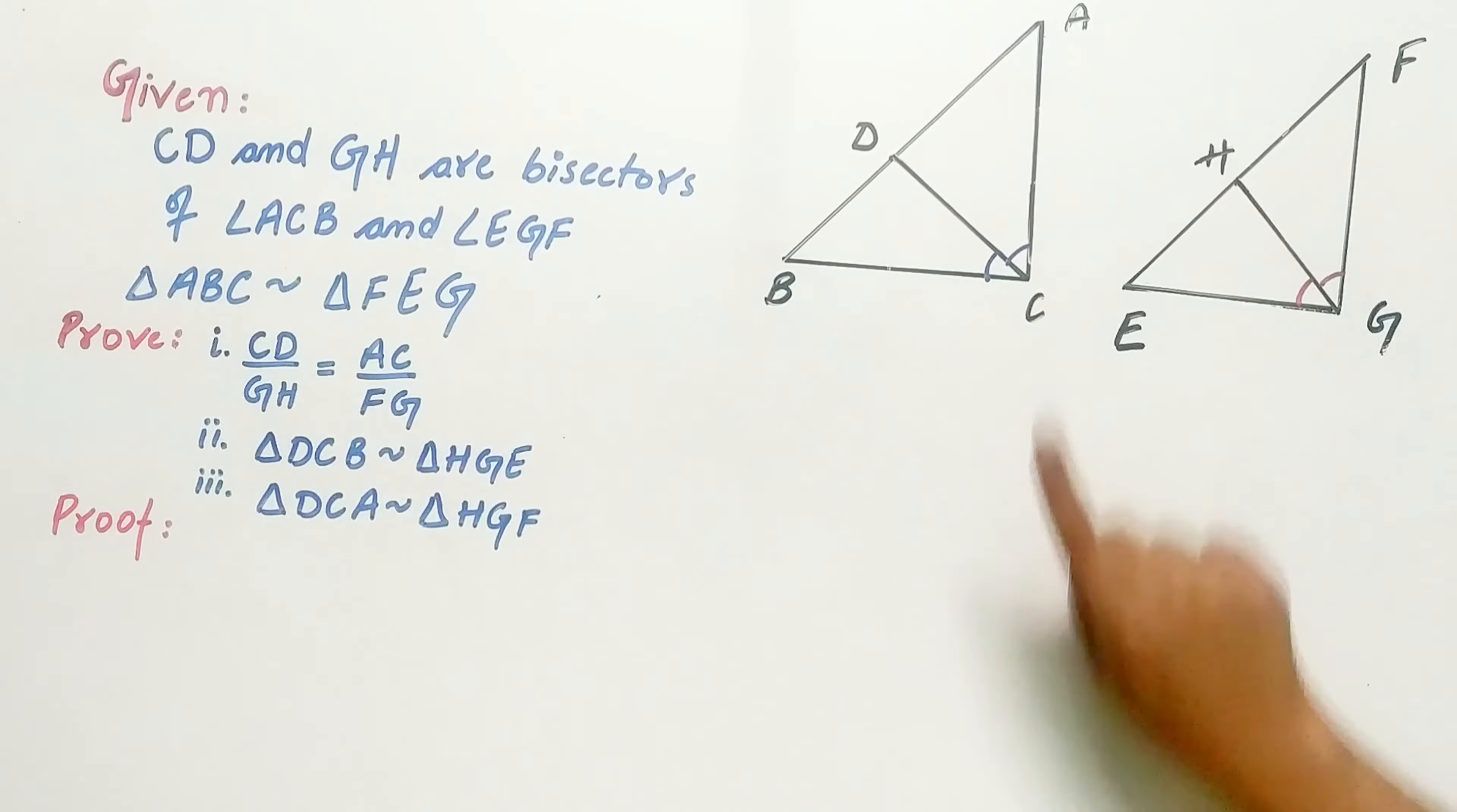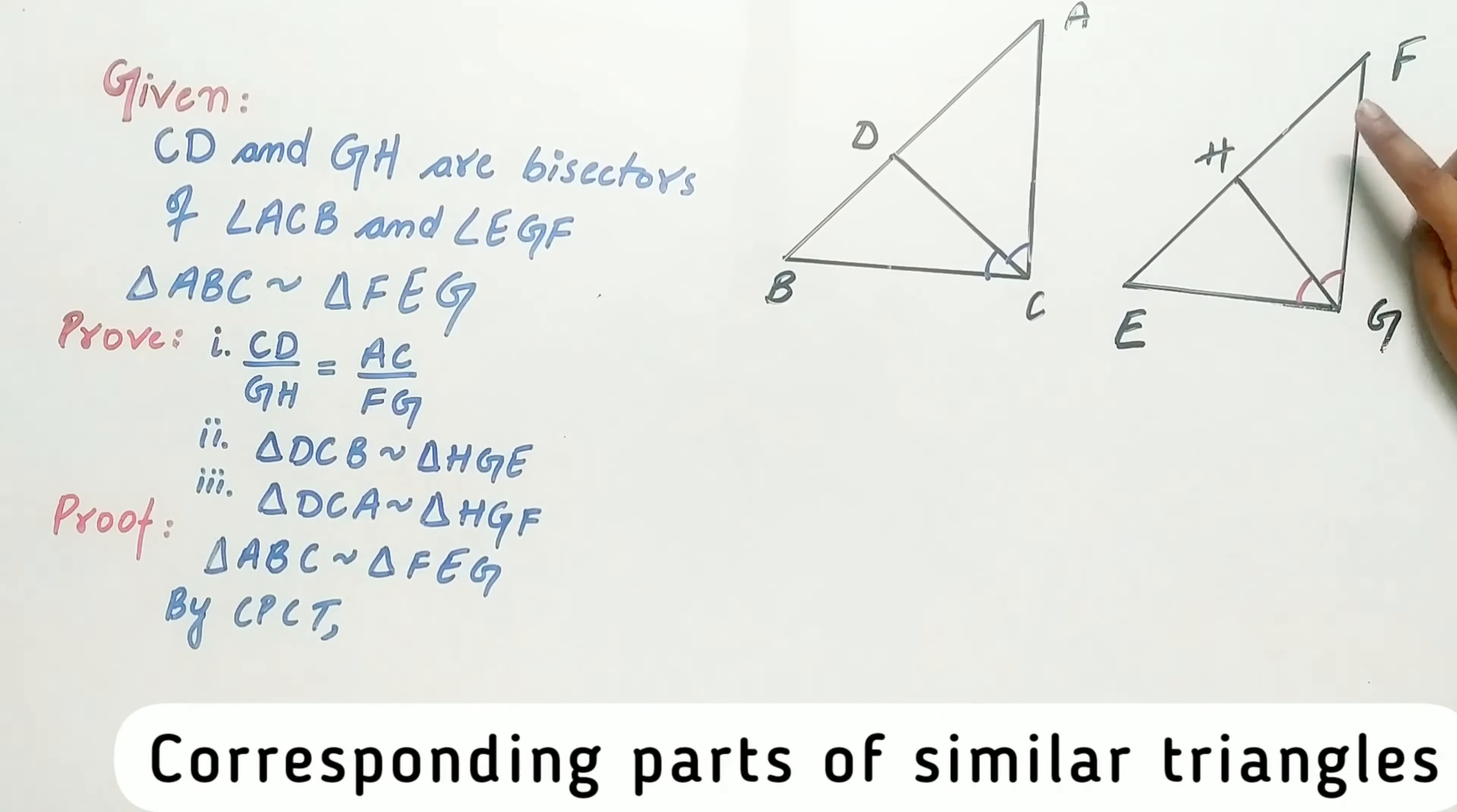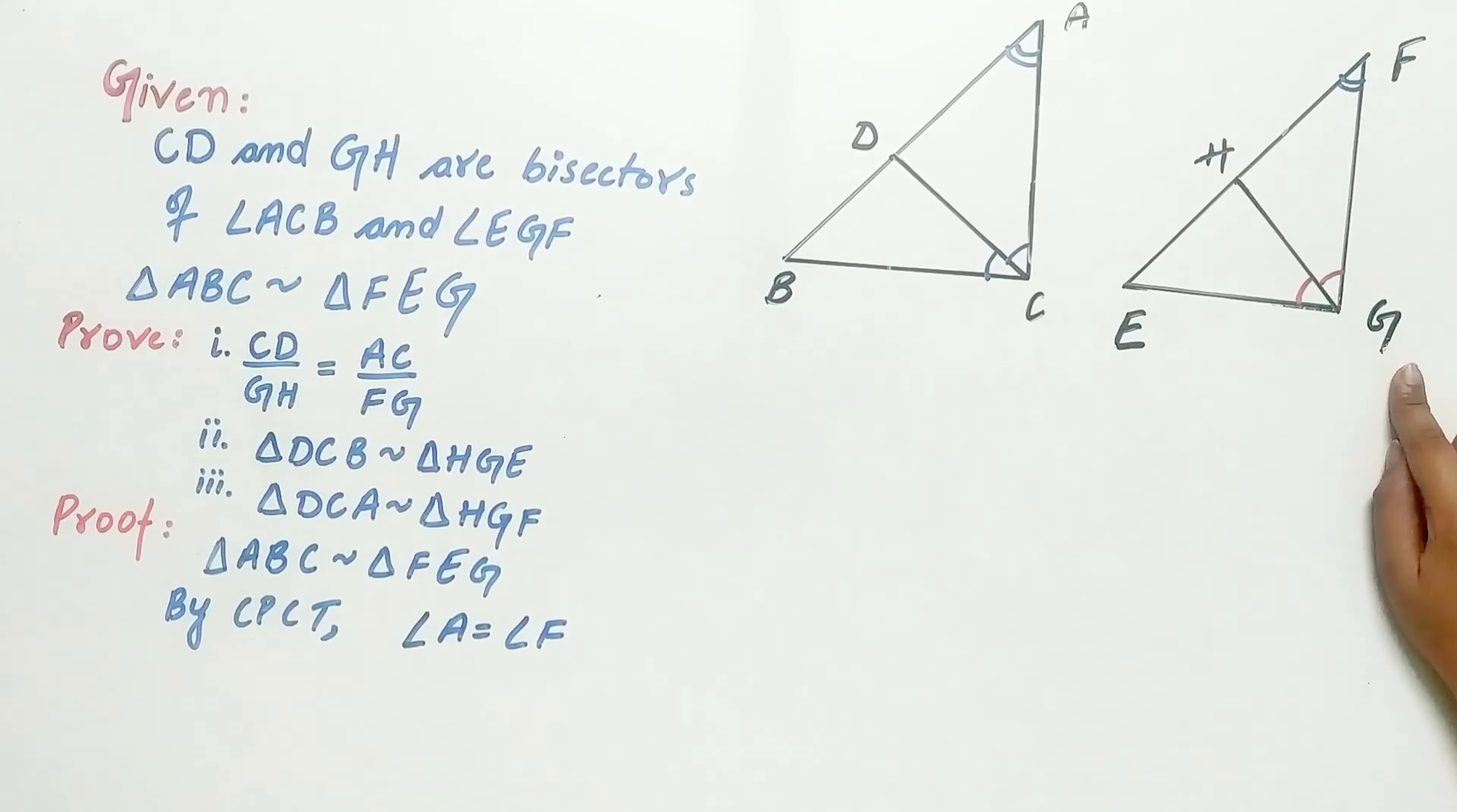So we know triangle ABC is similar to triangle FEG. Hence, by CPCT, angle A is equal to angle F. Similarly, angle C is equal to angle G.